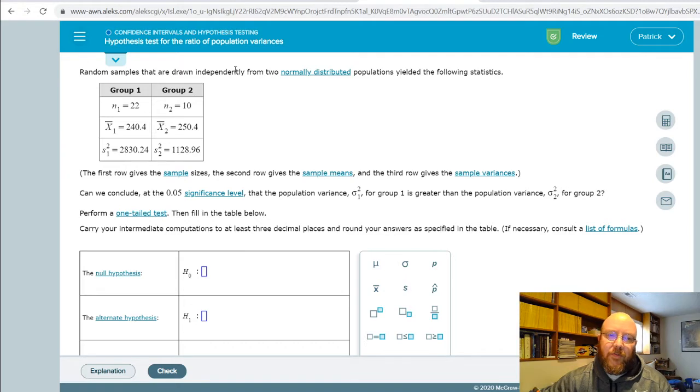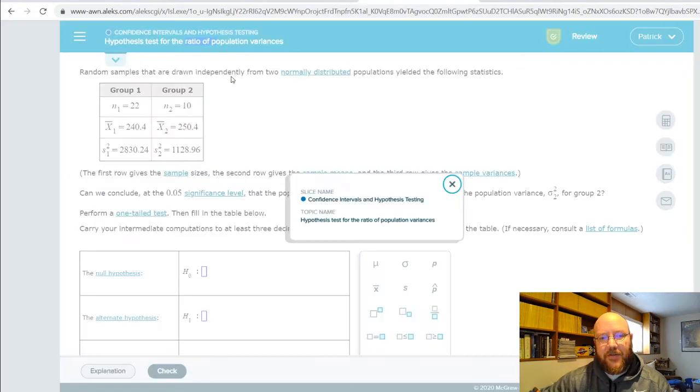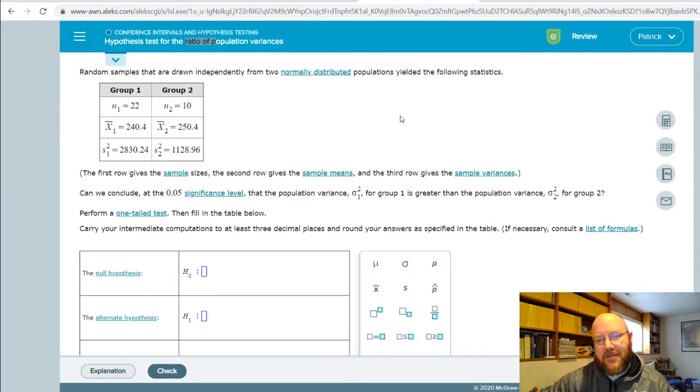The first thing that I need you to notice is different on these. It's going to ask for a ratio. Rather than normal hypothesis testing which we do like sample one minus sample two equals zero or does not equal zero, this one's going to be a ratio and so you have to think about it a little bit more difficult in a little bit more advanced way.